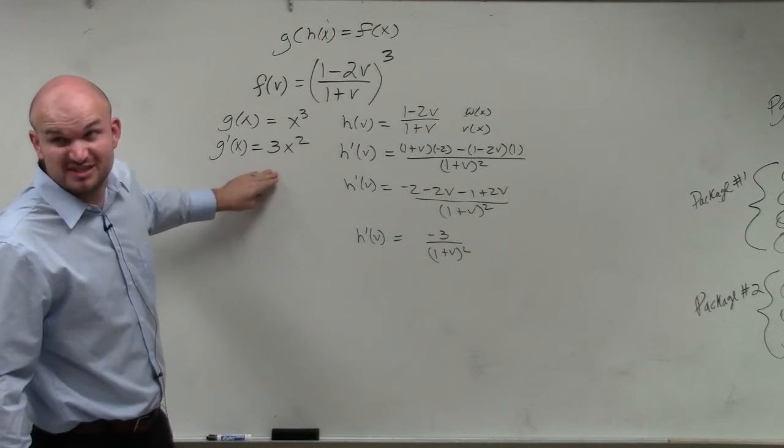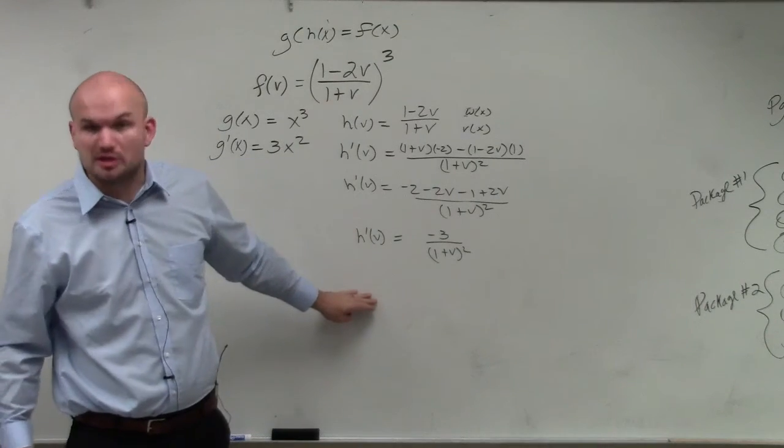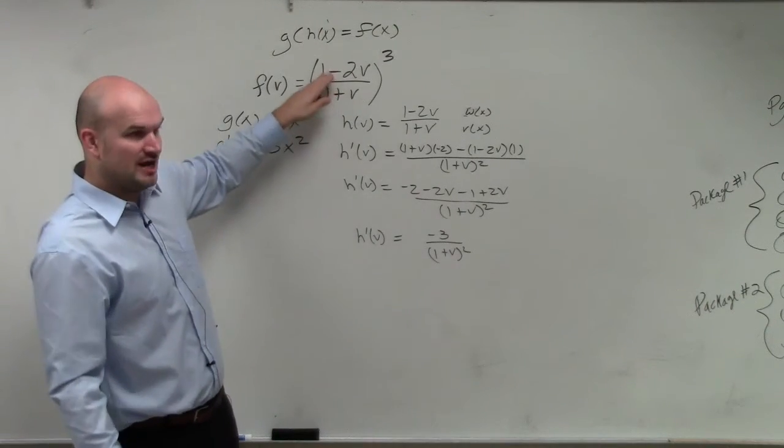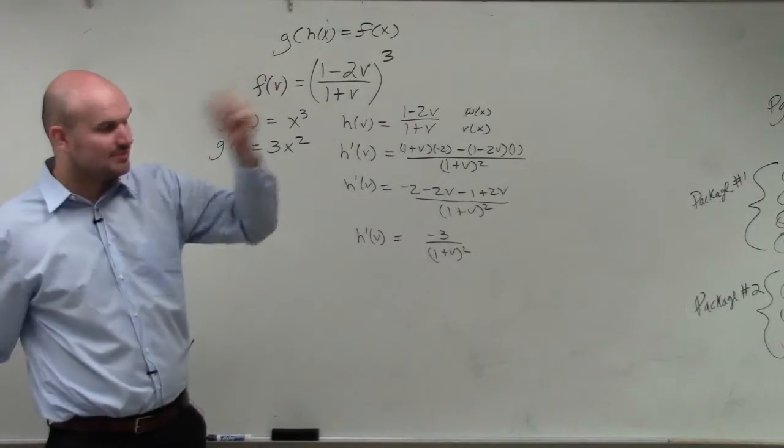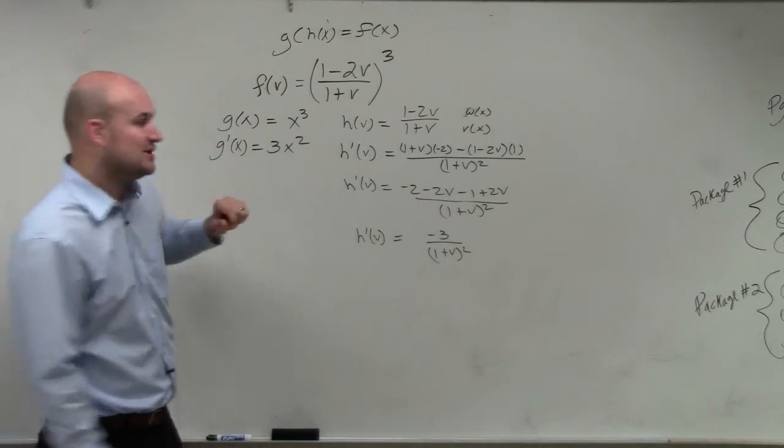So to find g prime was fairly simple. To find h prime took a little work, right? So it was a chain rule, and then power and quotient rule. But now I can just, I'm sorry, now I can just apply the chain rule.